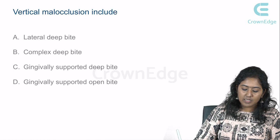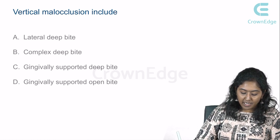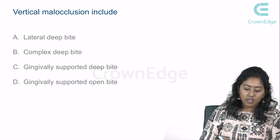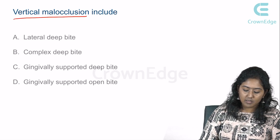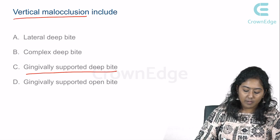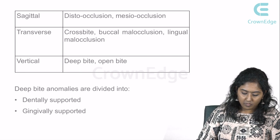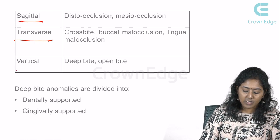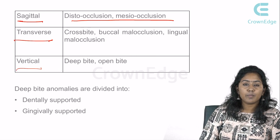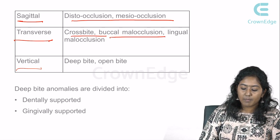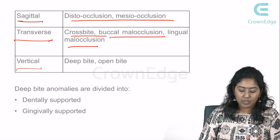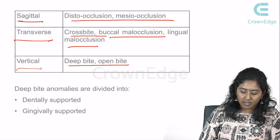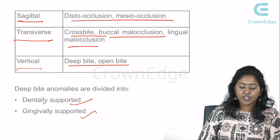Vertical malocclusions include lateral deep bite, complex deep bite, gingivally supported deep bite, and gingivally supported open bite. In all three spatial directions: sagittal — disto-occlusion and mesio-occlusion; transverse — crossbite, buccal and lingual malocclusion; vertical — deep bite and open bite. Deep bite anomalies are divided into dentally supported and gingivally supported.